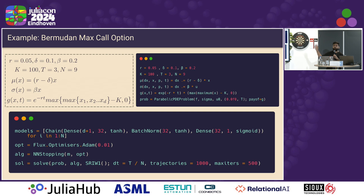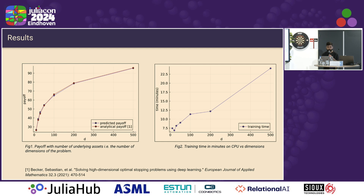This is what the API looks like. You define your constants, then your drift and volatility, then you define the models, the optimizer, and the algorithm, and then you call solve just like you would for any other SciML problem. Here are some results. The first plot is analytical payoff versus the predicted payoff by the model, and as you can see, we scale up to 500 dimensions for this case. The training is done on CPU for now because it does some scalar indexing, but we are working on getting a GPU version.